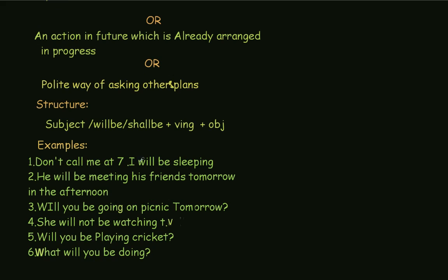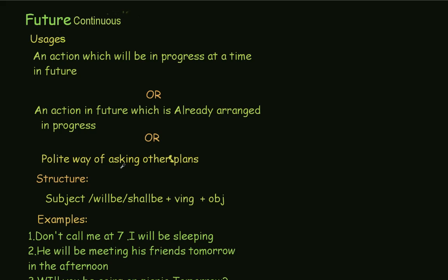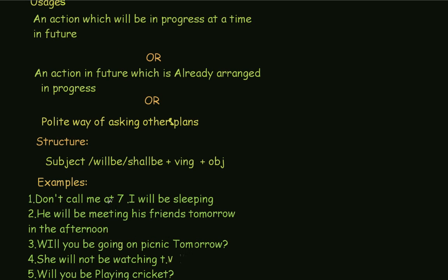The first example is: 'Don't call me at seven, I will be sleeping.' Here we are saying don't call me — this is an action in the future which is already arranged in progress. This is already arranged, and he is talking about the future.